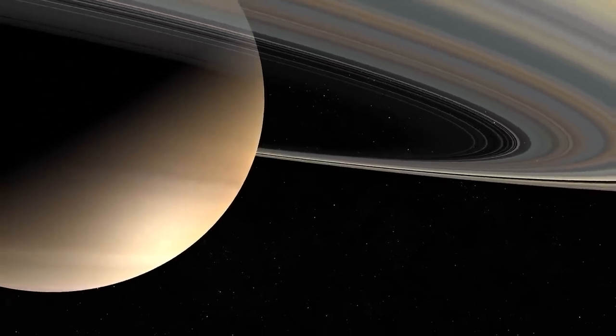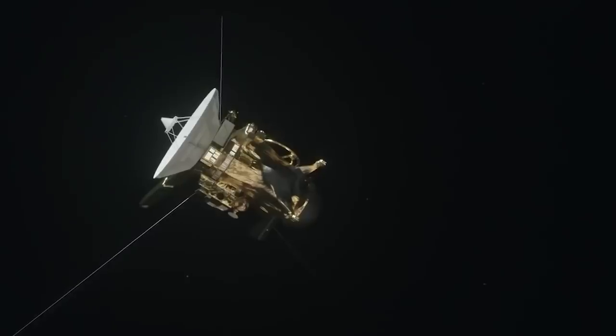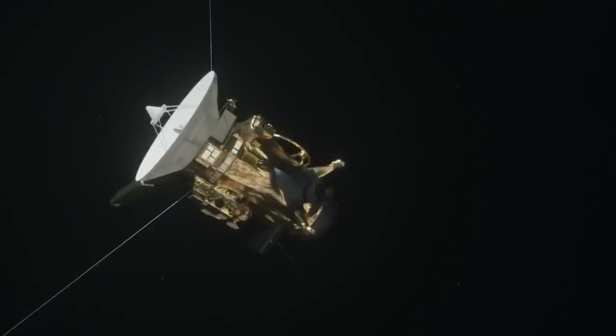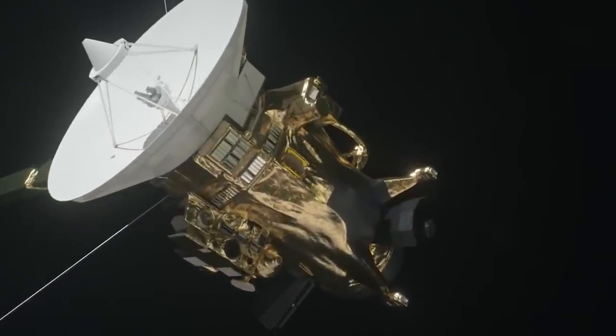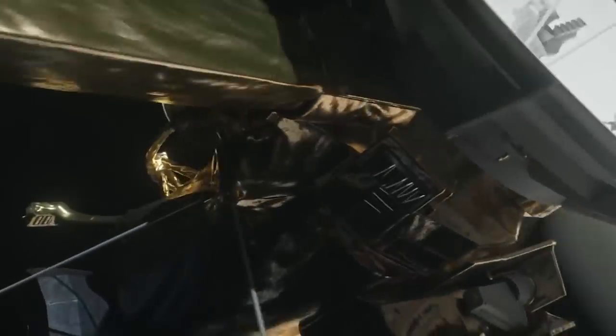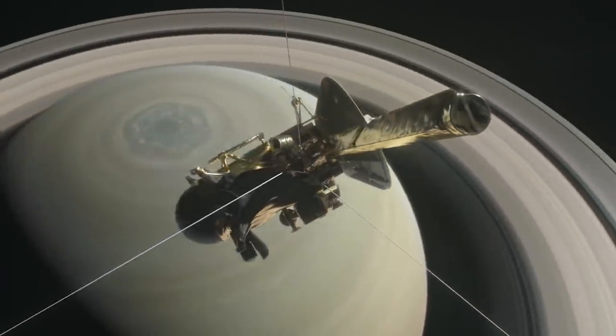Traveling to Saturn is possible in the long, or even very long term. Indeed, the Cassini-Huygens mission, led by NASA, was able to place a probe in orbit around Saturn after 2,664 days of travel, or seven years.